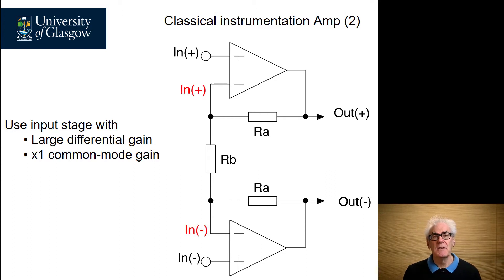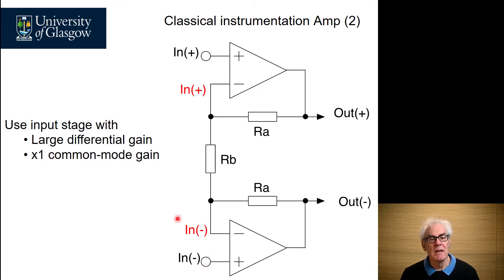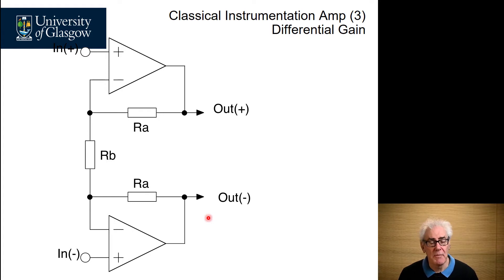Doing some analysis around the circuit: if we have an input signal at N plus, then because we have a perfect op amp, we have N plus superimposed at that node. Similarly, on the negative side, we have N minus applied. Let's start doing the analysis of the differential gain of this buffer amplifier and see how it helps the performance of our instrumentation amplifier.